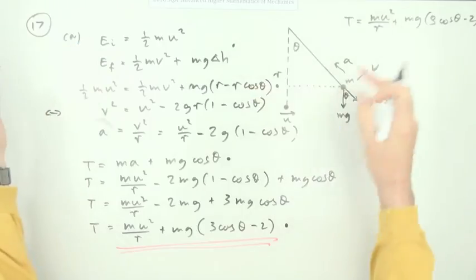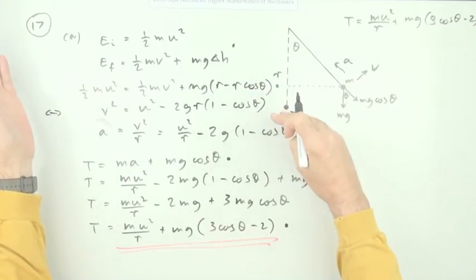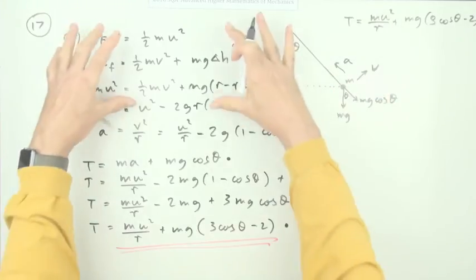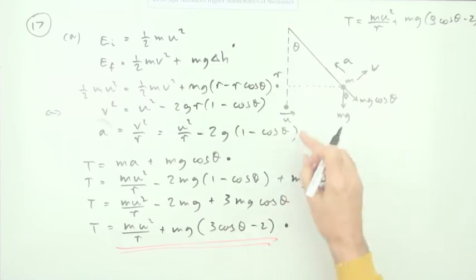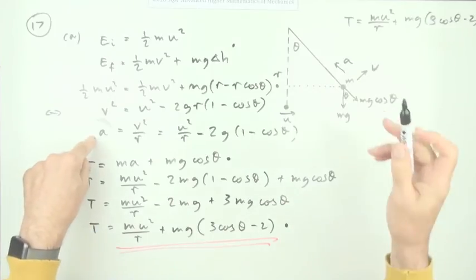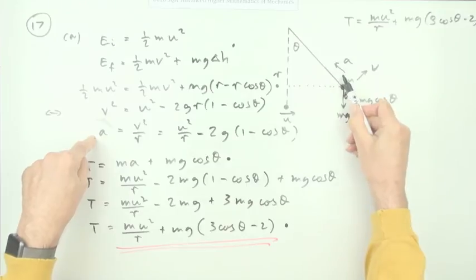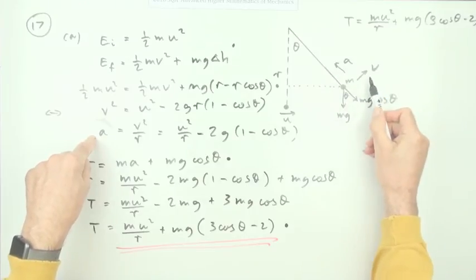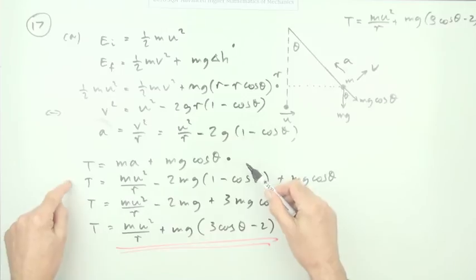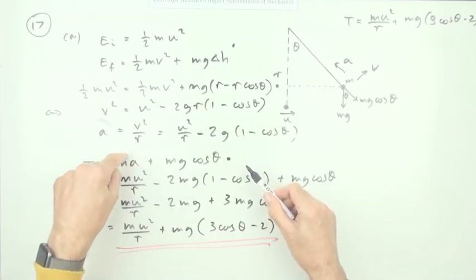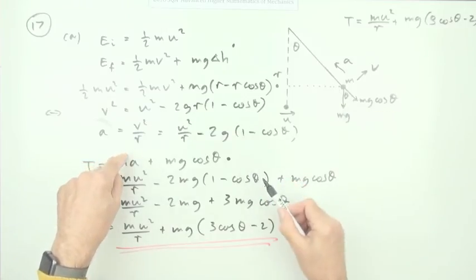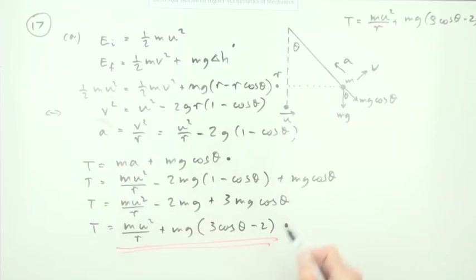Because I would have thought the critical things would have been using the conservation of energy, about some of the kinetic energy translating into potential energy. The second part would have been getting the centripetal acceleration from that new velocity. The third mark would have been realizing the tension's got to support that centripetal acceleration and support the component of the weight. And then the fourth mark would have been for putting it all together and tidying it up.